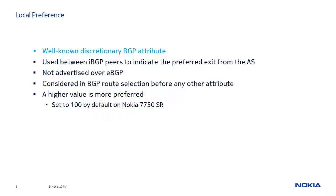Local Preference is a well-known discretionary BGP attribute. This means that it must be recognized by all BGP routers, but may or may not be present in a BGP update message. The Local Preference attribute is used between IBGP peers within an AS to indicate the preferred exit path to an external destination. This attribute is used only when advertising a route to an IBGP peer and is not included in updates sent to eBGP peers.